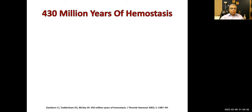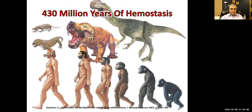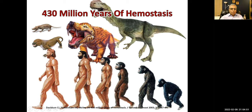Let's go back into the history of hemostasis. This goes back 430 million years ago, when we had these strange animals which no longer exist, but they also had a clotting system.